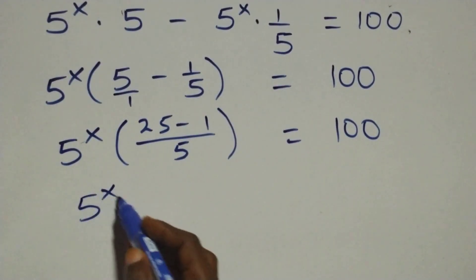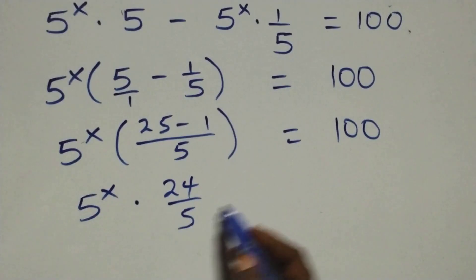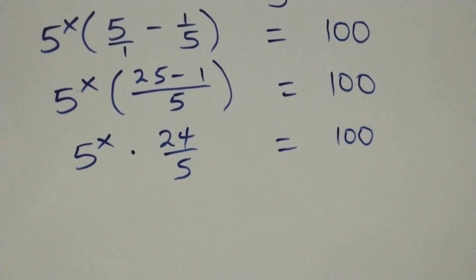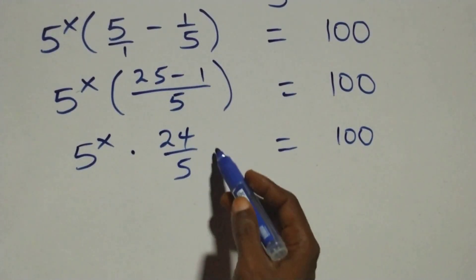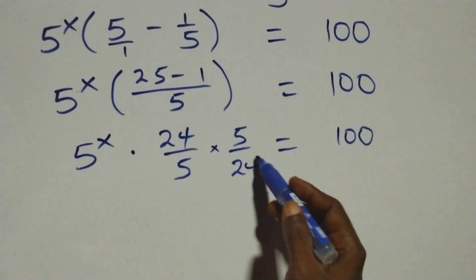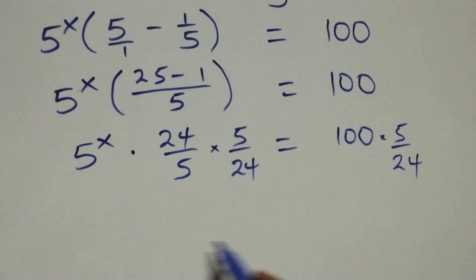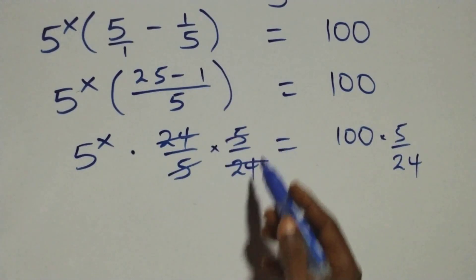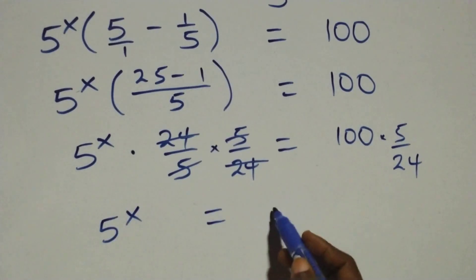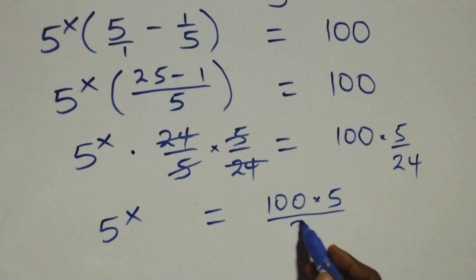That is, we have 5 raised to power x times 24 over 5, which equals the right-hand side. Then we remove the 24 over 5 and multiply both sides by 5 over 24. Multiplying both sides by 5 over 24, the 24 over 5 and 5 over 24 cancel each other, giving us 5 raised to power x equals the right-hand side times 5 over 24.